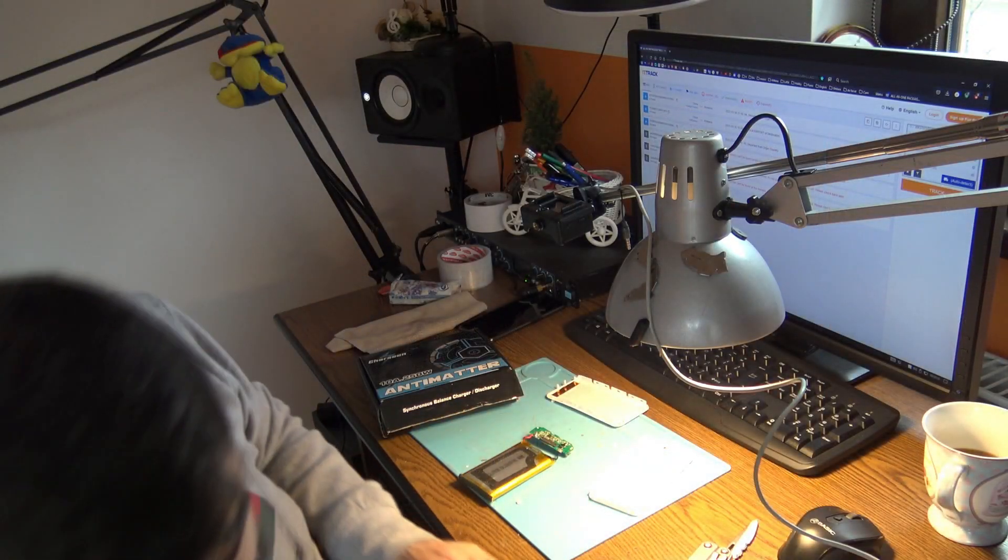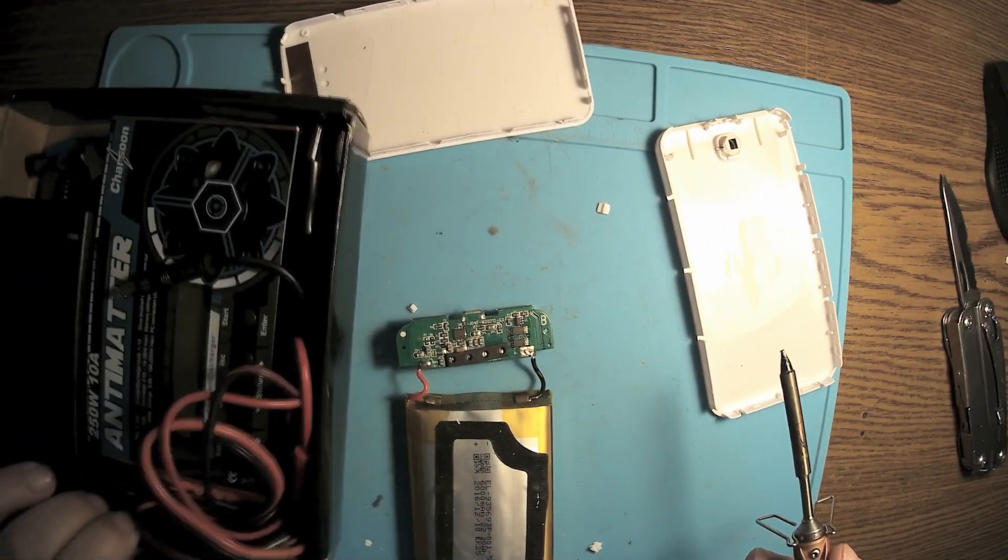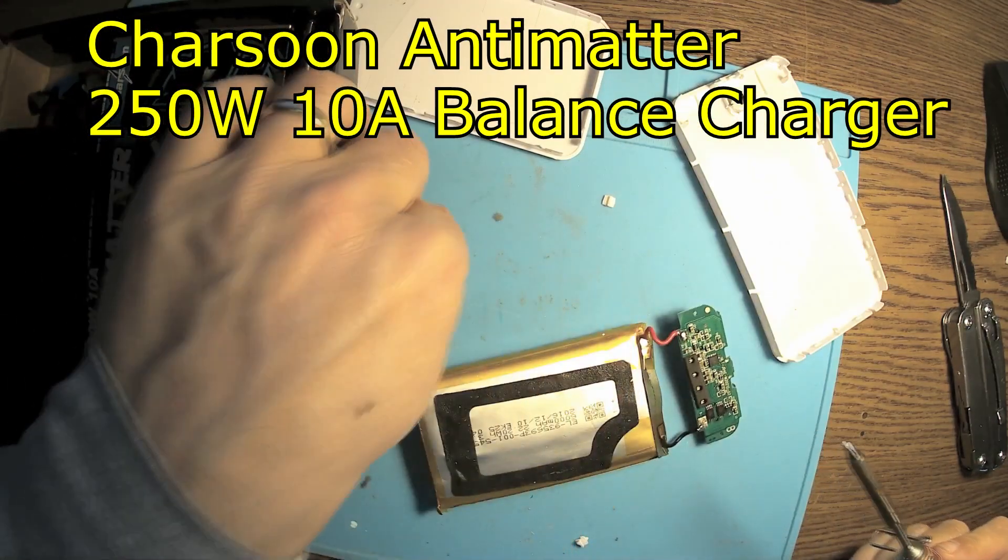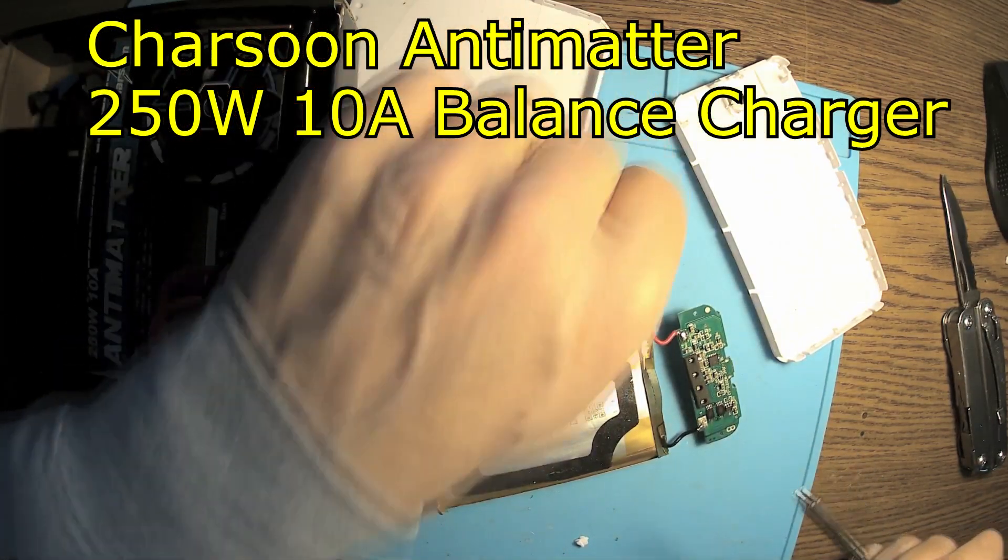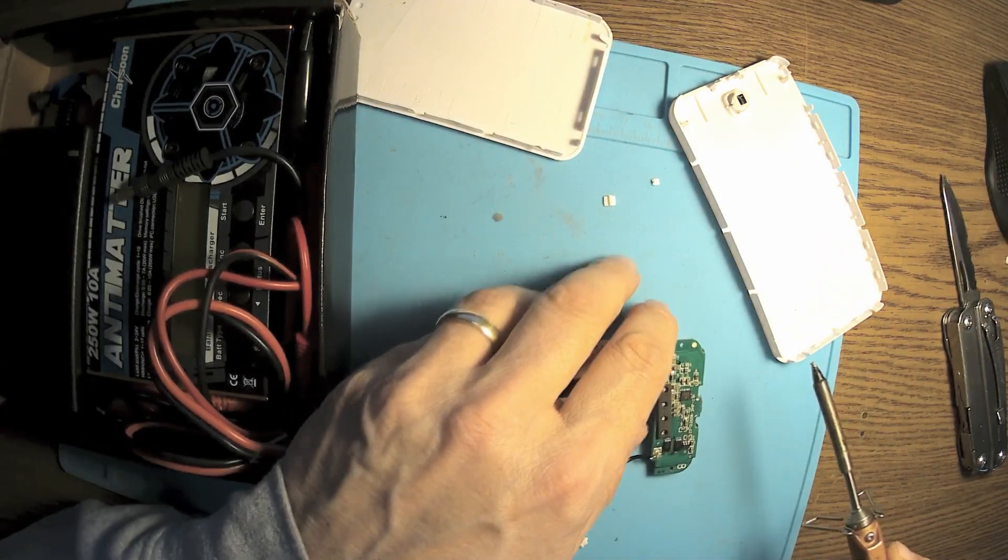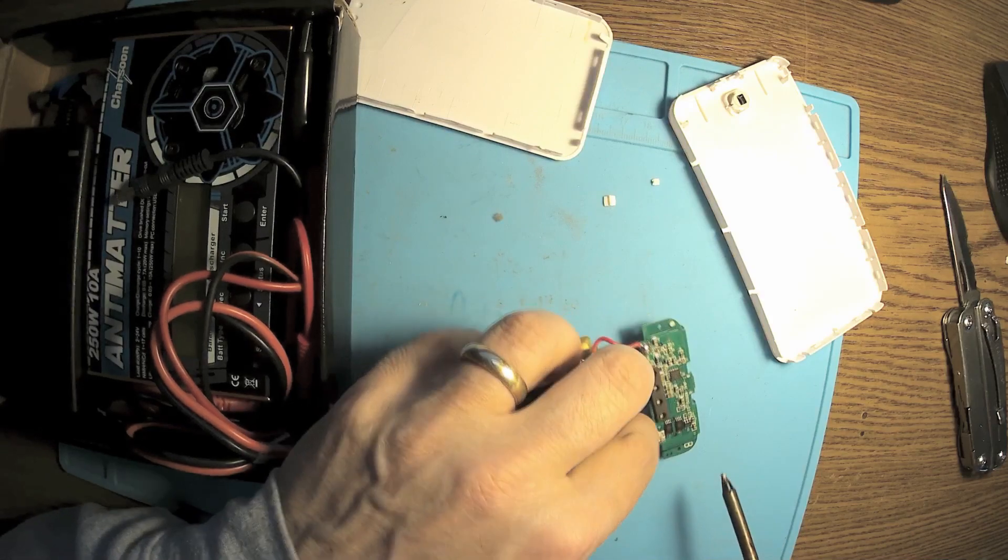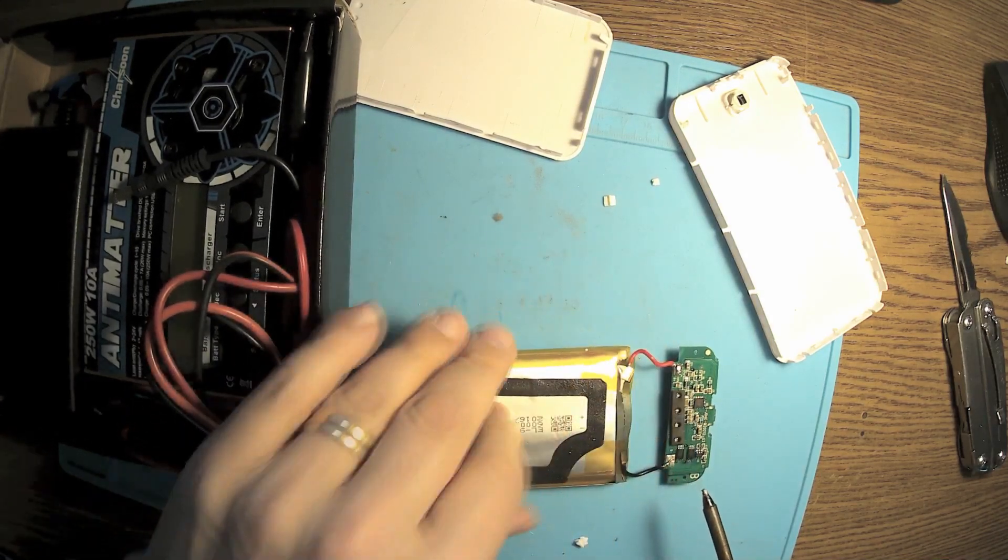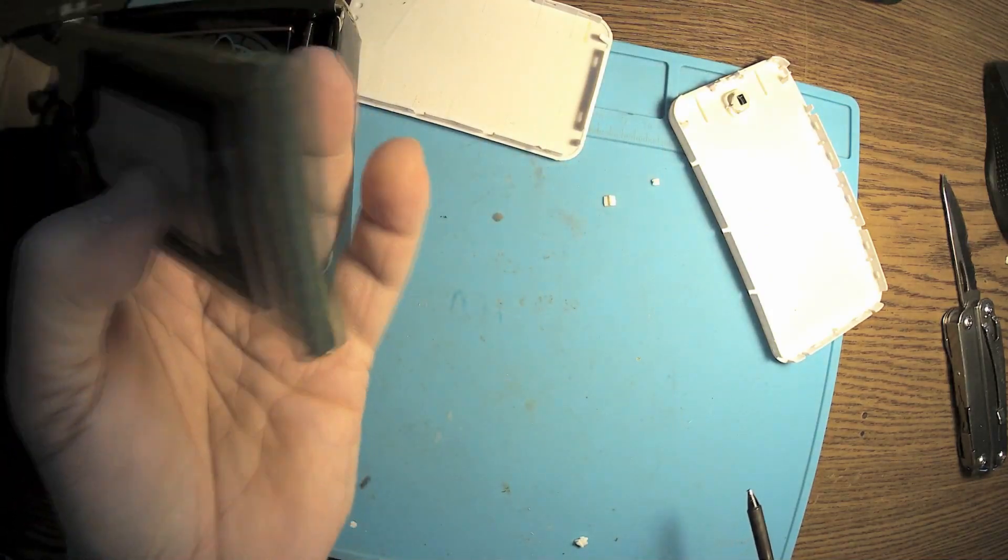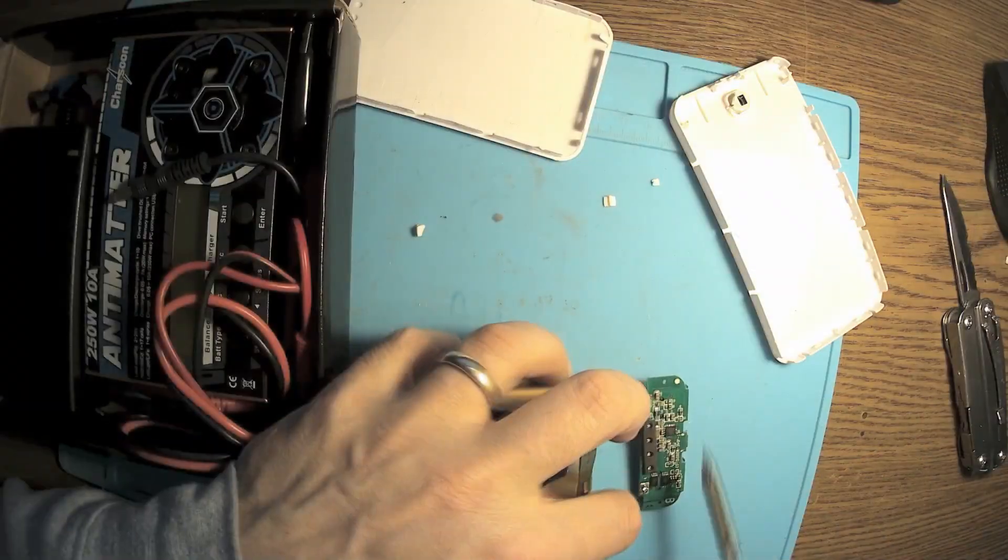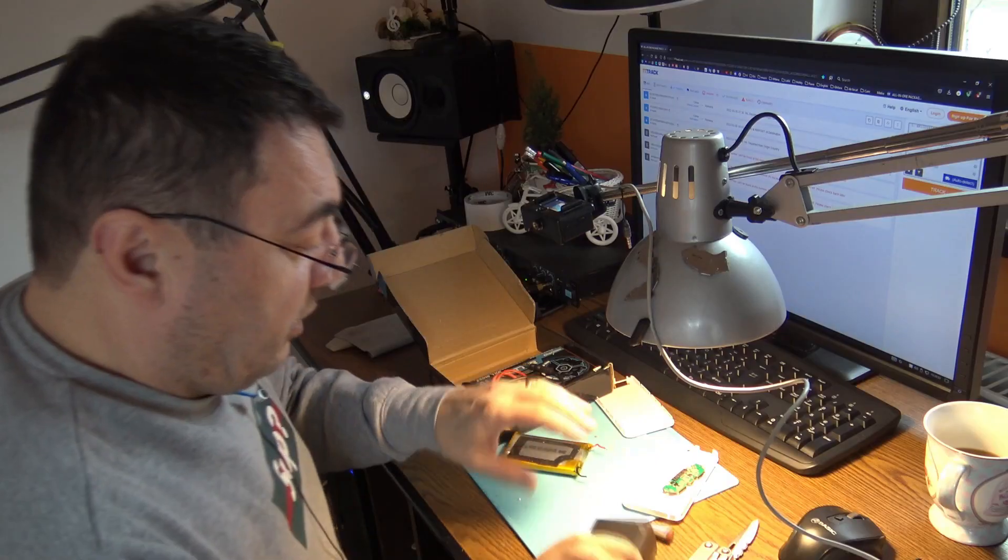Let me disconnect that. I'm gonna use my Charsoon Antimatter to have a couple of charging and discharging and to see if it's something related to the battery or the charger. But I doubt. I'm pretty sure the cell is gone. Look at this, you can see it already.